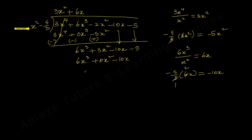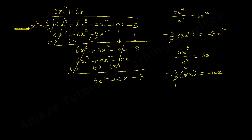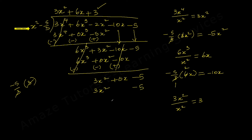Now subtract — minus becomes plus. 6x³ - 6x³ cancels. 3x² - 0x² is 3x². The -10x + 10x also cancels. We are left with 3x² and -5, which we can write as 3x² + 0x - 5. Divide 3x² by x², giving 3 as the final term of the quotient. Multiply: 3 times x² = 3x² and 3 times -5/3 = -5. Both cancel, giving remainder 0.